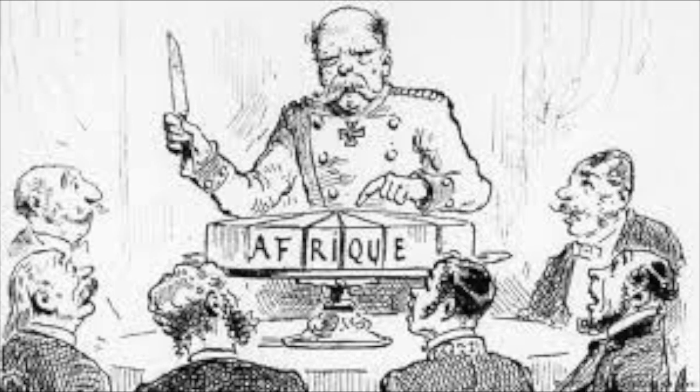Africa was divided during the Berlin Conference. Competition was so fierce that European countries feared war among themselves, so to prevent conflict, 14 European nations met at the Berlin Conference in 1884 to lay down the rules for the division of Africa. Any European country could claim land by notifying other nations and showing it could control the area. European nations divided the continent with little thought about how African ethnic or linguistic groups would be disturbed.